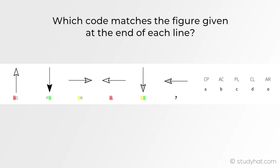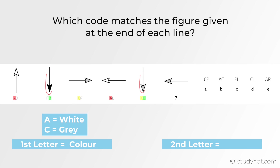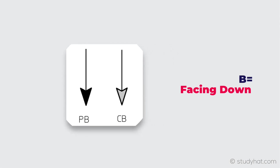There's also C that starts on the first letter, so if we take a look at these two figures, they again don't match up in terms of direction, but C features a grey colour. Therefore we now know that the first letter represents colour, and A equals white while C equals grey. B was another repeated letter — comparing these two shapes, it can't be colour since that represents the first letter. What they have in common is direction: both shapes face downwards, so the second letter represents direction, and the code for B is a downward direction.